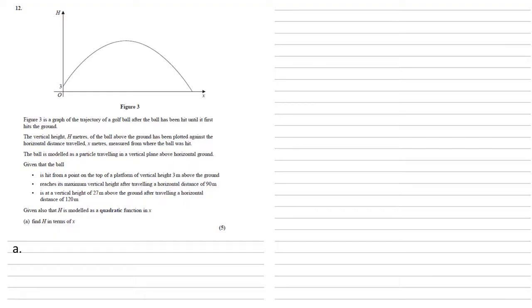As h is modelled as a quadratic function, we know it must be written in the form ax squared plus bx plus c where a, b and c are constants to be found. Using our first bullet point, we know it's starting at 0, 3, so when x is 0, h is 3, but this means the c at the end, that would be the only thing left if x was 0, so our quadratic must be h equals ax squared plus bx plus 3.